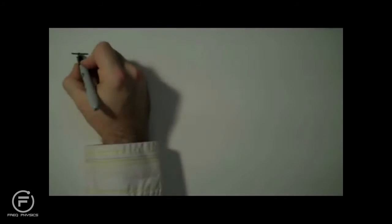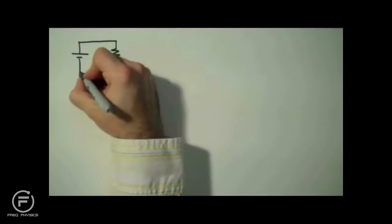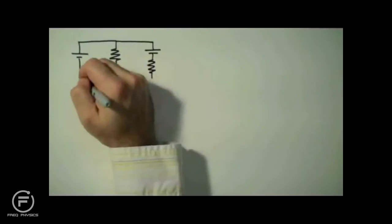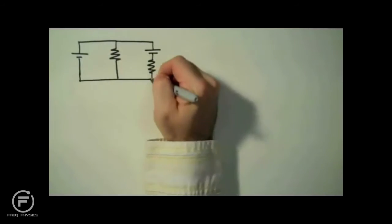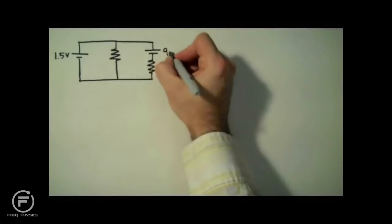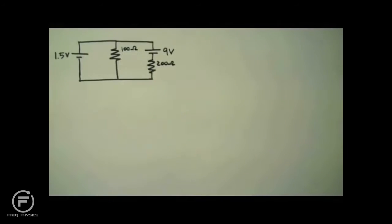We're going to use Kirchhoff's rules to analyze a circuit. Specifically, we're going to determine the current through, the voltage across, and the power dissipated by the two resistors that you see here.